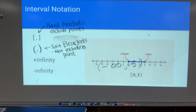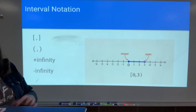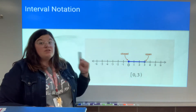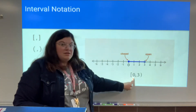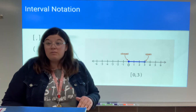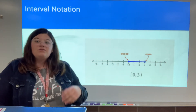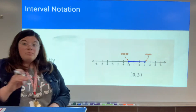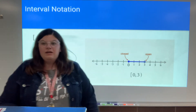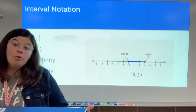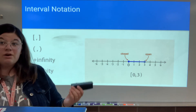Here's a finite interval — it has two endpoints. I have an open endpoint at 3 and a closed endpoint at 0. My endpoints are 0 and 3, with 0 first since it's the smaller number. Am I including 0? Yes — closed circle — so I use a hard bracket on 0. My other endpoint is 3. Am I including 3? No — open circle — so that's a soft bracket. The interval notation is written as: hard bracket 0, comma, 3, close paren.